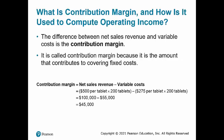The difference between net sales revenue and variable cost is called contribution margin. It is called contribution margin because it is the amount that contributes to covering fixed cost.